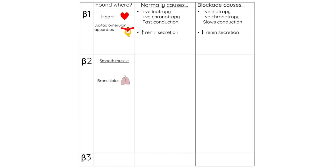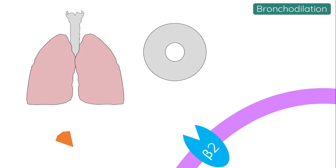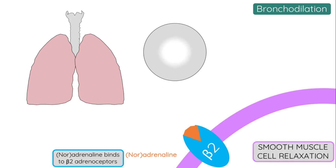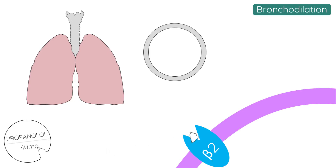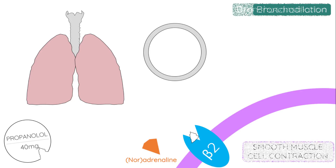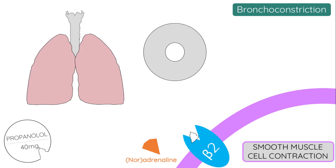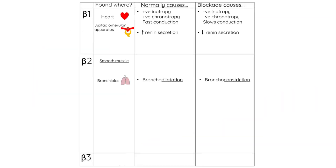Beta-2 receptors are found predominantly in areas of smooth muscle — for example, in the smooth muscle of the bronchioles in the lungs. Activation of these beta-2 receptors causes smooth muscle cell relaxation. When noradrenaline or adrenaline binds to the beta-2 receptor in the smooth muscle cell of the bronchiole, this causes the smooth muscle cells to relax, leading to bronchodilatation. If we give a beta-blocking drug, that will block the beta receptor, preventing the binding of noradrenaline or adrenaline, and this will cause bronchoconstriction as the smooth muscle cells contract. So essentially, wherever beta-2 receptors are found in smooth muscle cells, they lead to smooth muscle cell relaxation.